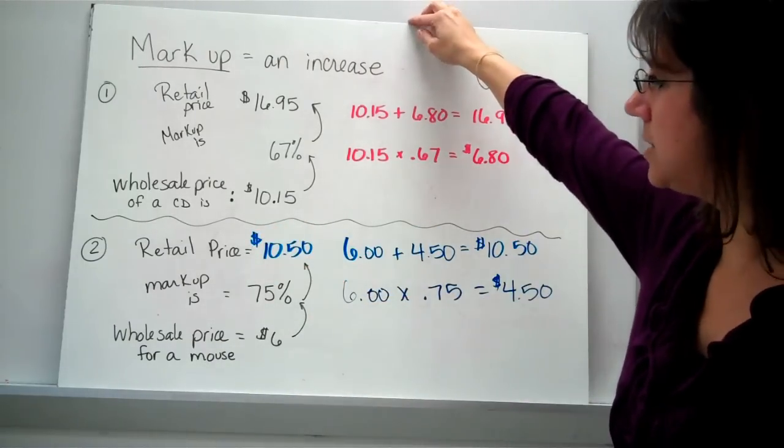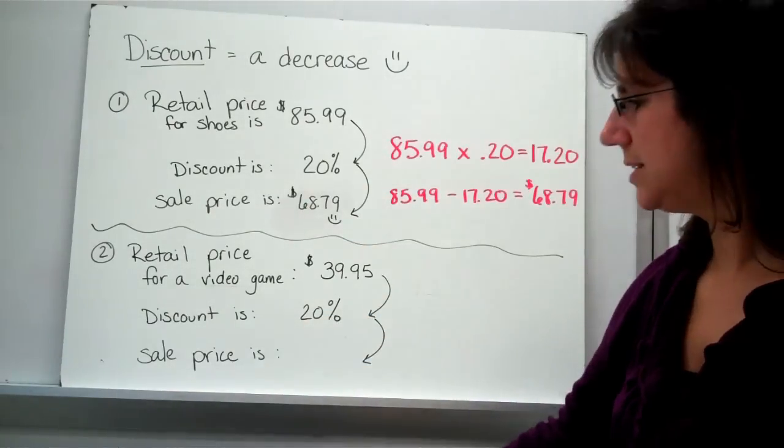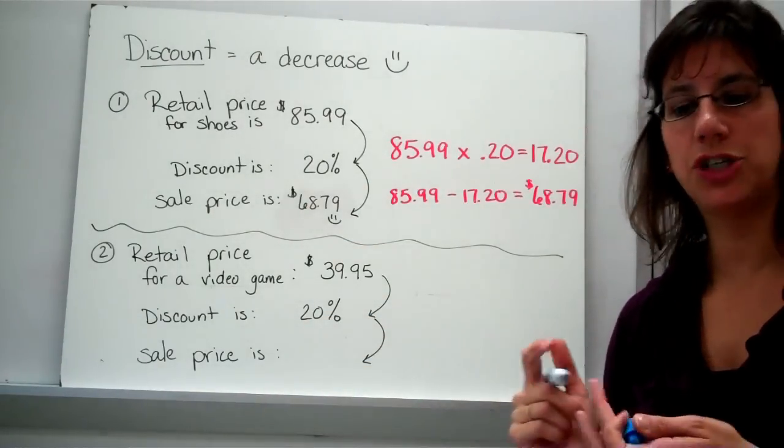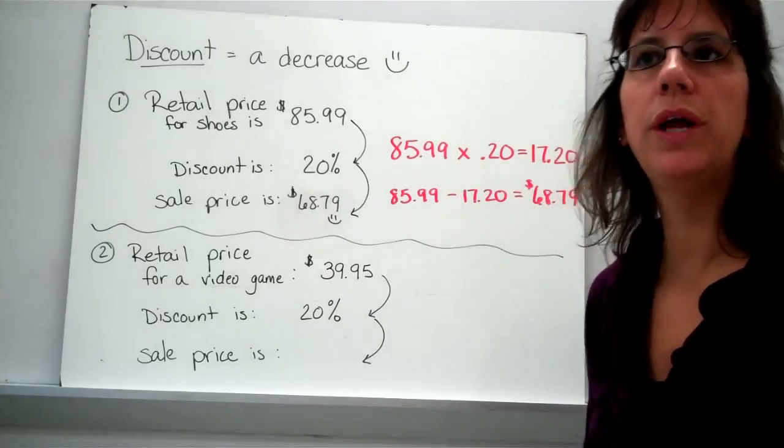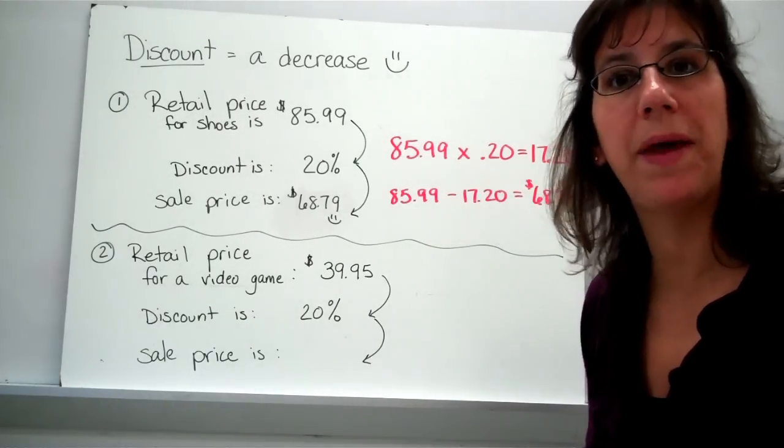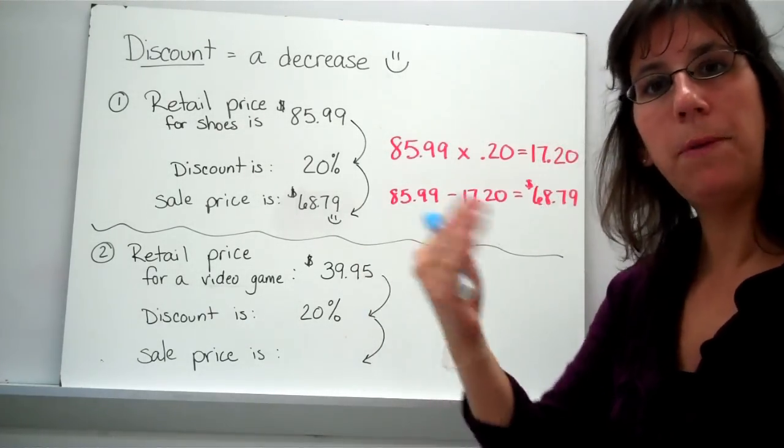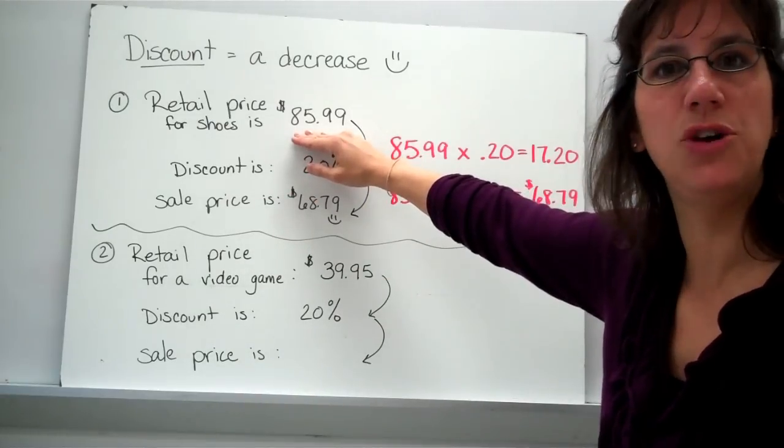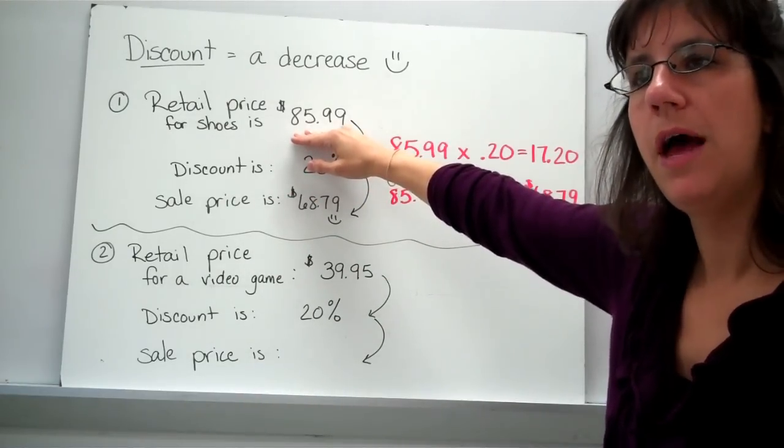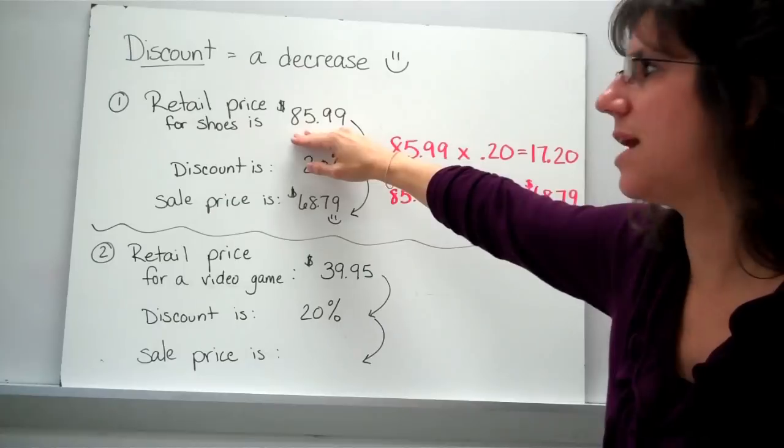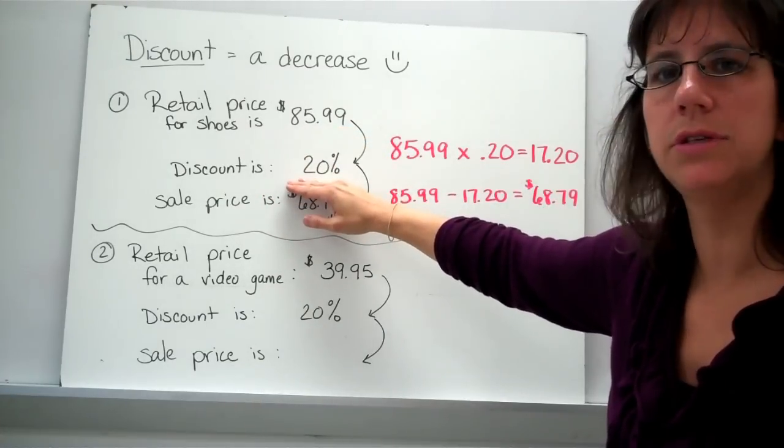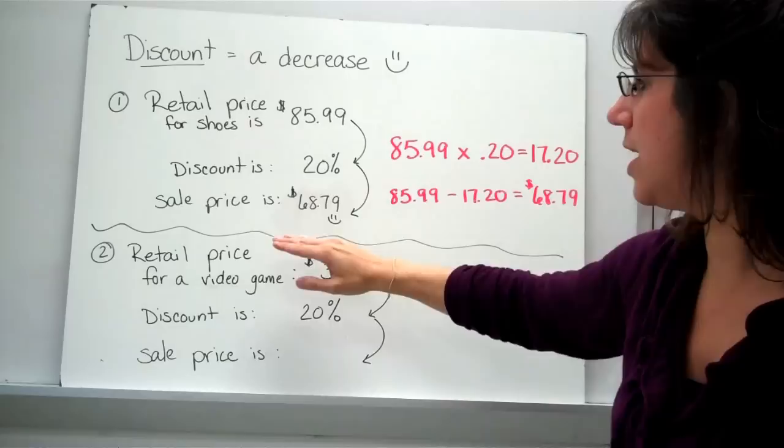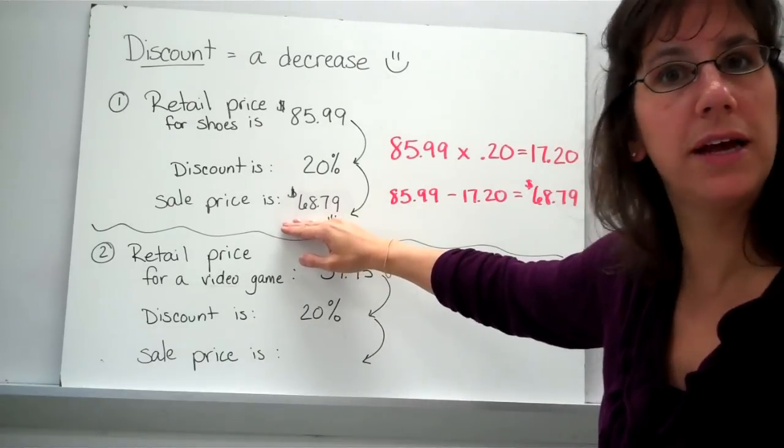Alright, let's go ahead and take a look at discounts now. A discount is a decrease. As a shopper and a consumer, we love decreases. That means we're paying less money. The price is going to go down. So here's my price that it normally would sell for in the store. But the store is going to put it on sale. It's going to tell me a discount. And then this is the price I actually have to pay at the register.